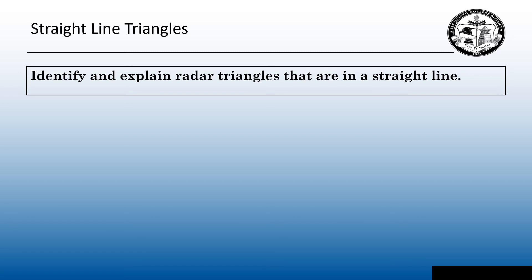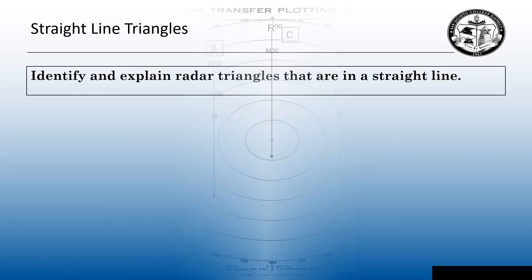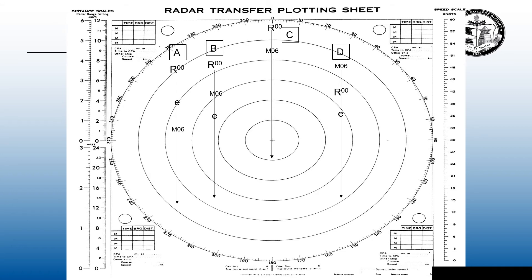Triangles that do not look like triangles — I call them straight line triangles. We're going to identify and explain triangles that are in a straight line. I have four contacts here. Starting with contact Charlie first, even though it's not a triangle, it represents a very important concept. The R00 and the M06 is in a straight line. Under rule seven of the navigation rules, this invokes risk of collision, since we have a constant bearing and decreasing range — or at least a close quarter situation may develop. You have to be very careful with contacts that have a constant bearing and decreasing range.